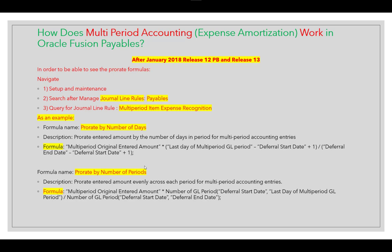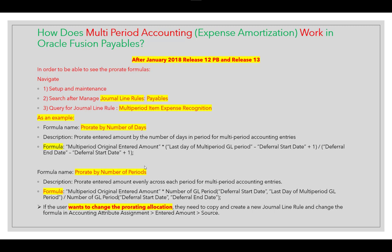By default, the system uses prorate by number of periods, not days. If the user wants to change the prorating method, they need to copy the seeded Oracle journal line rule and create a new one — following the SLA/accounting rule concept. Then change the formula in the accounting attributes assignment for the entered amount source, which is by default 'Prorate by Number of Periods'.